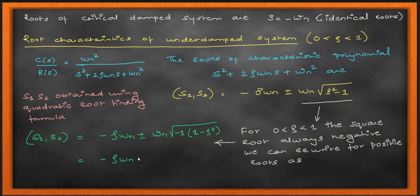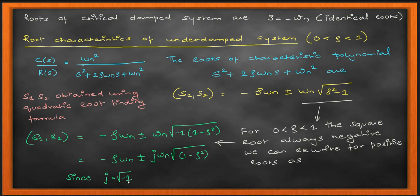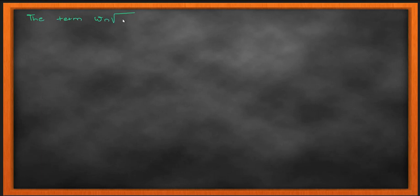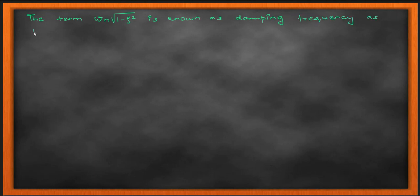I'm going to make a substitution here. After taking root of minus one as j, I define omega_d = omega_n * sqrt(1 - zeta squared) as my damped frequency. This frequency is dependent on the damping ratio zeta — when zeta fluctuates between 0 and 1, the damped frequency also changes. So the damped frequency omega_d varies with the value of zeta, and that is the root characteristic of your underdamped system.